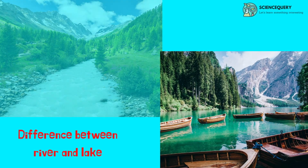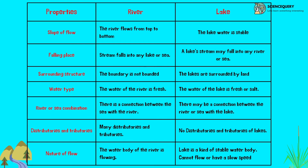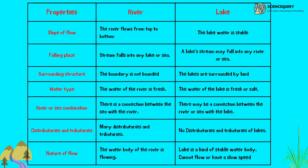Now the final difference between river and a lake. The river flows from top to bottom; the lake water is stable. A river stream falls into any lake or sea, whereas a lake stream may fall into any river or sea. The boundary of a river is not bounded; the lakes are surrounded by land. The water of the river is fresh; the water of the lake is either fresh or salty. There is a connection between the sea and the river, whereas there may be a connection between a river or sea with a lake. Many distributaries and tributaries are present in a river, but none for a lake. The water body of the river is flowing whereas the lake is a stable water body.